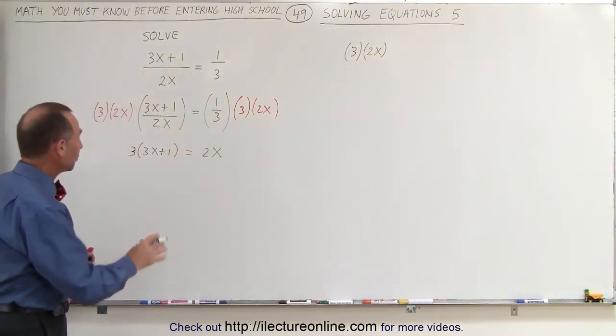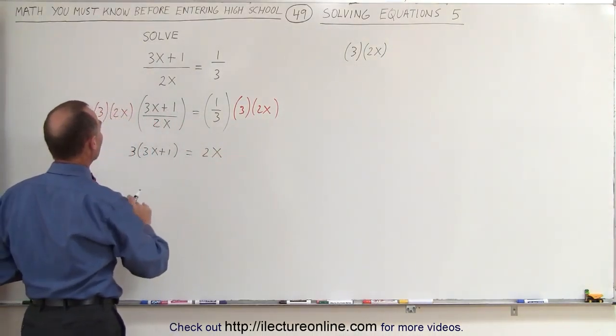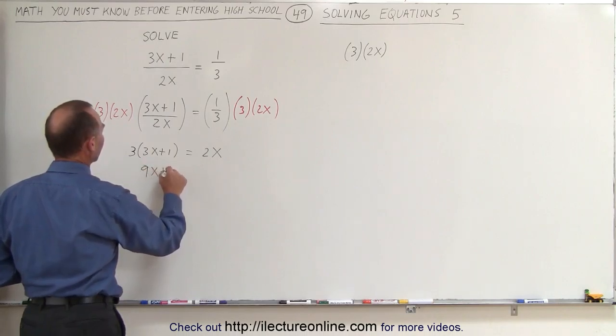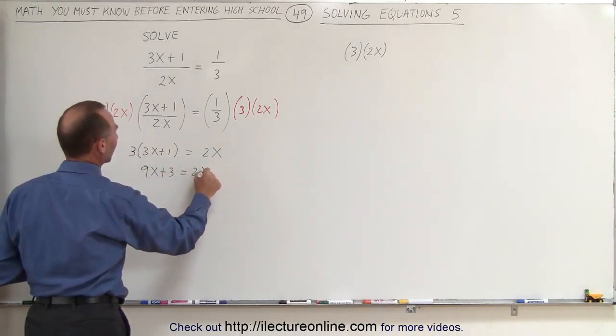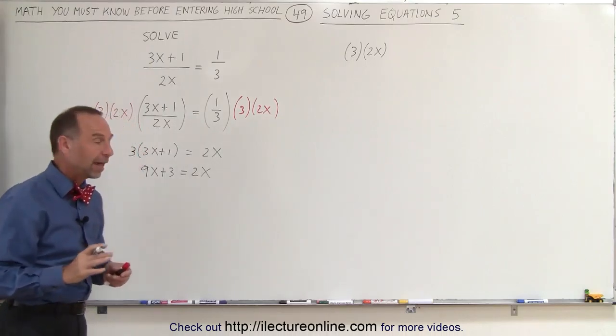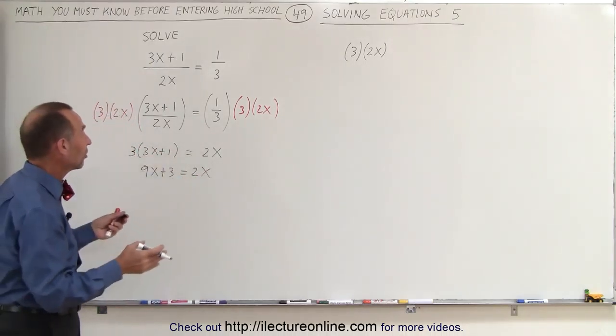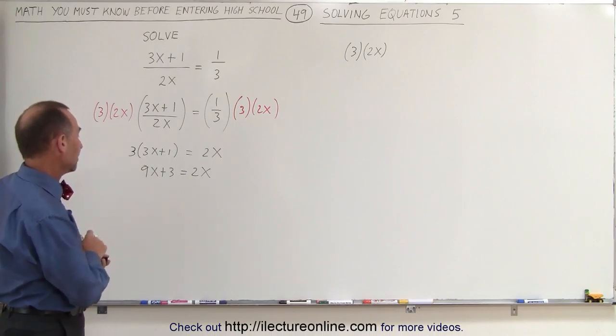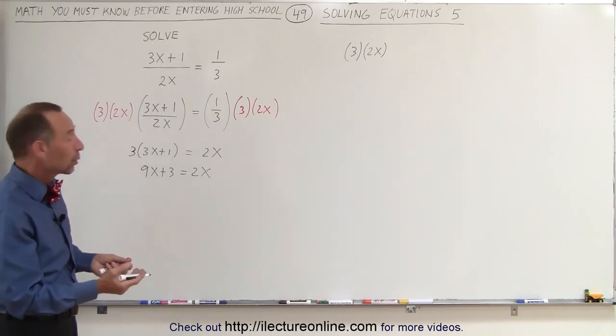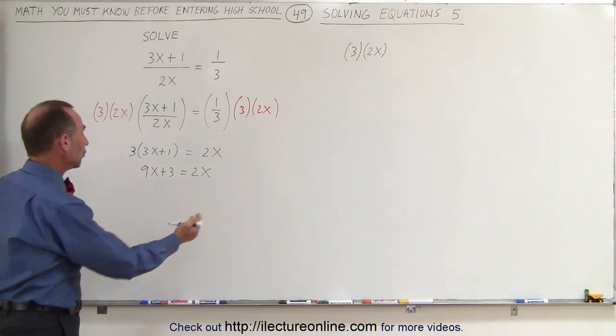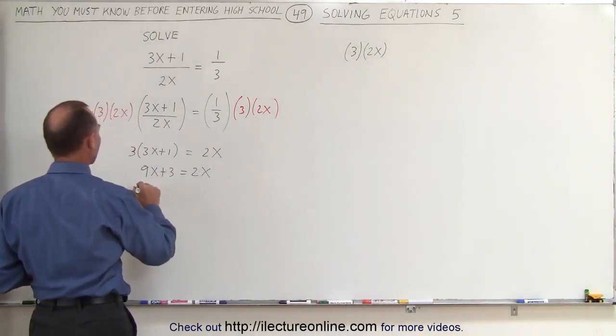Now, of course, the next step would be to get rid of the parentheses. So this becomes 9x plus 3 equals 2x. And now we want all the terms that have an x in them to the left side and all the numbers to the right side. Notice in this case, we're dealing with a linear equation, not a quadratic equation. So the method is to move all the x's to one side and all the numbers to the other side.